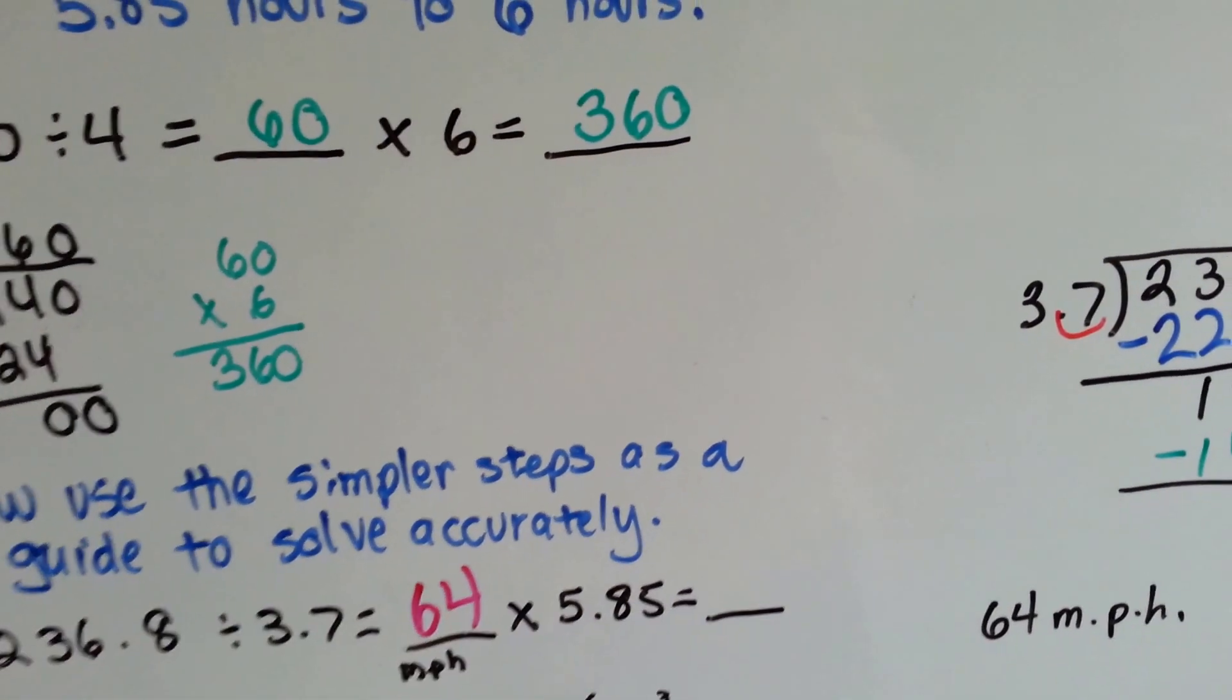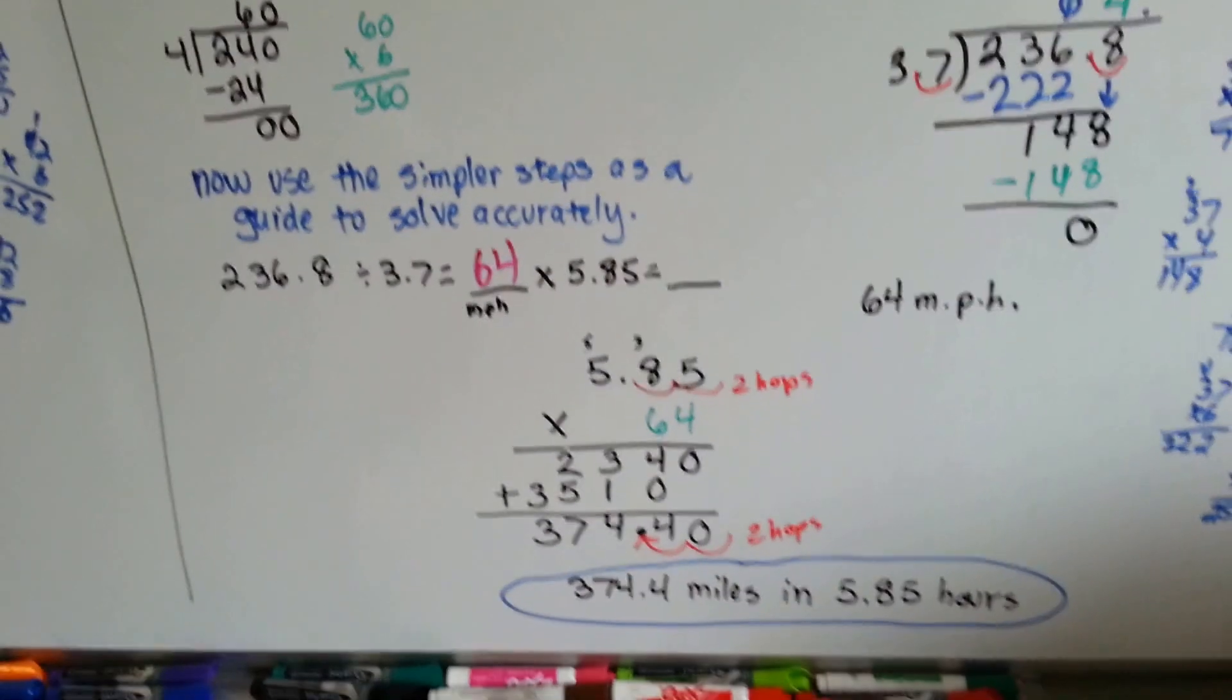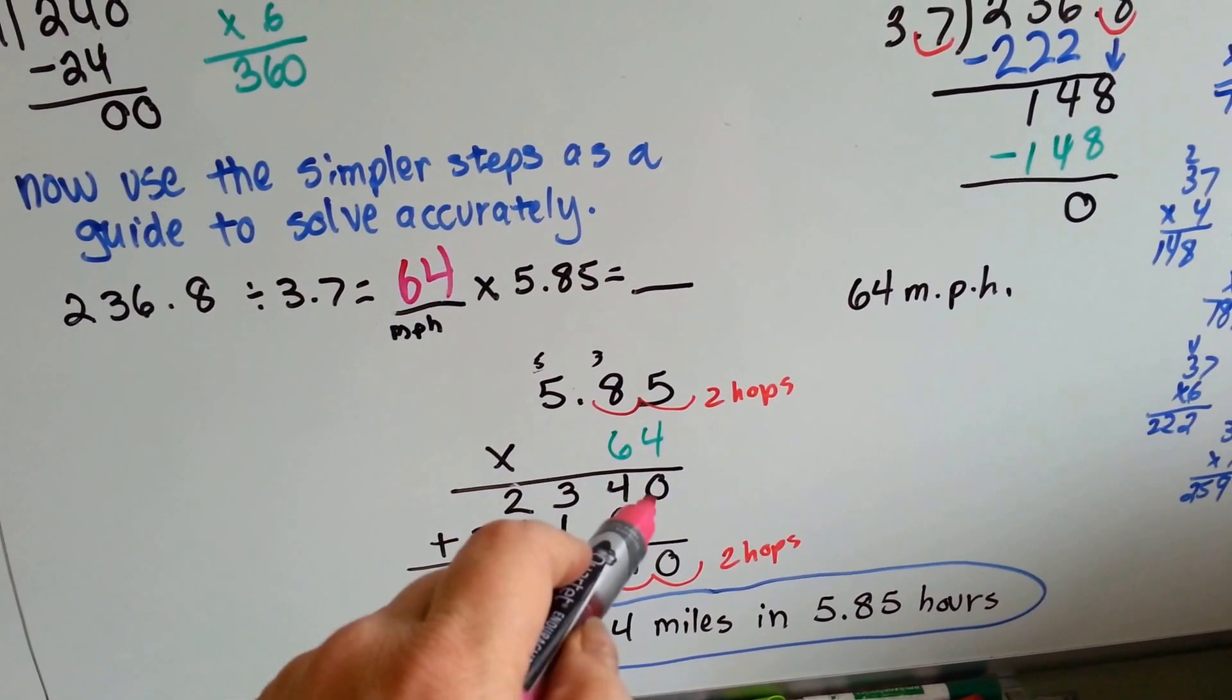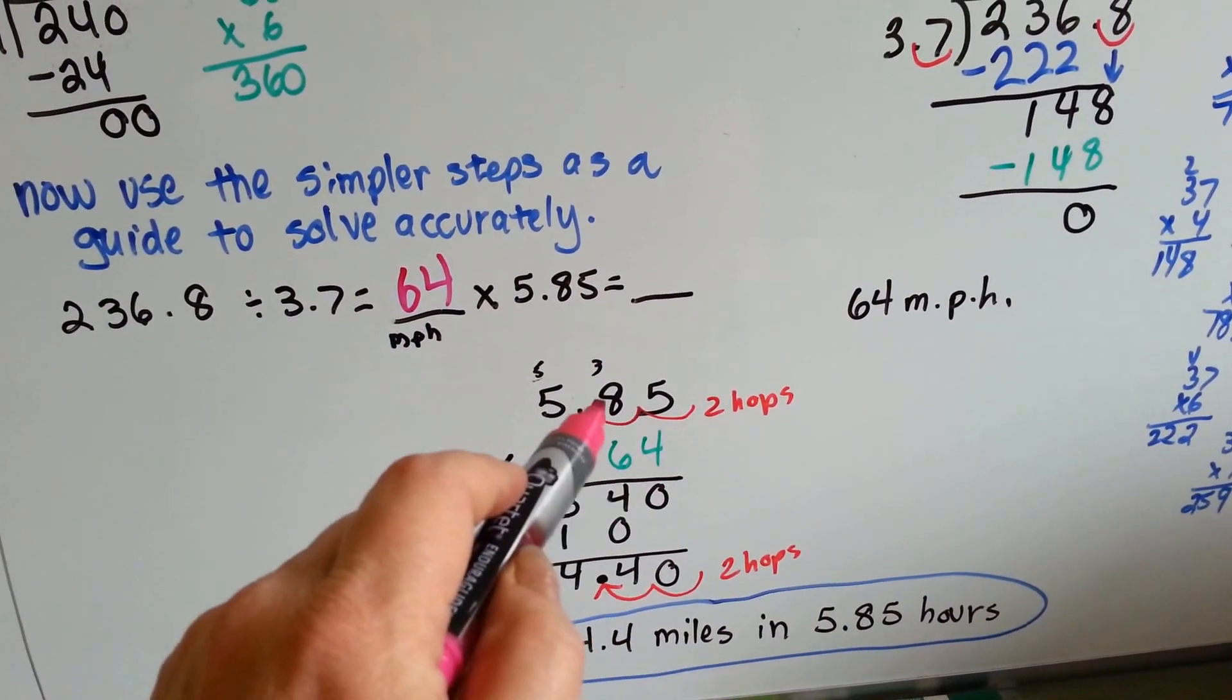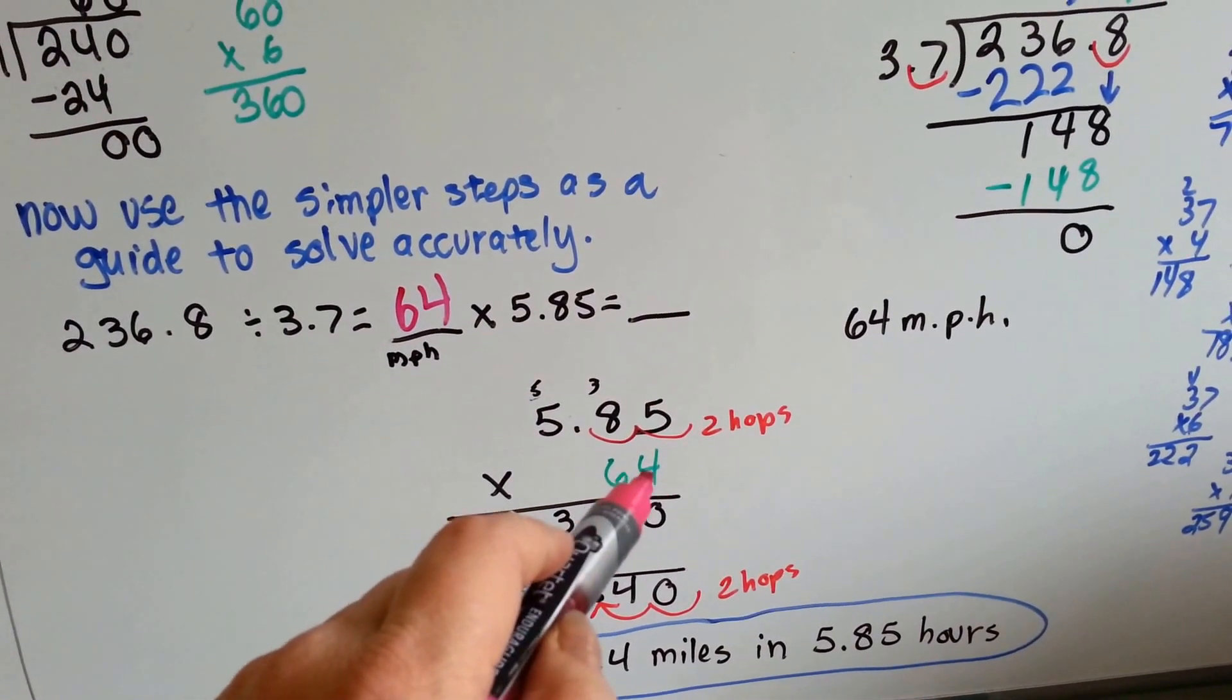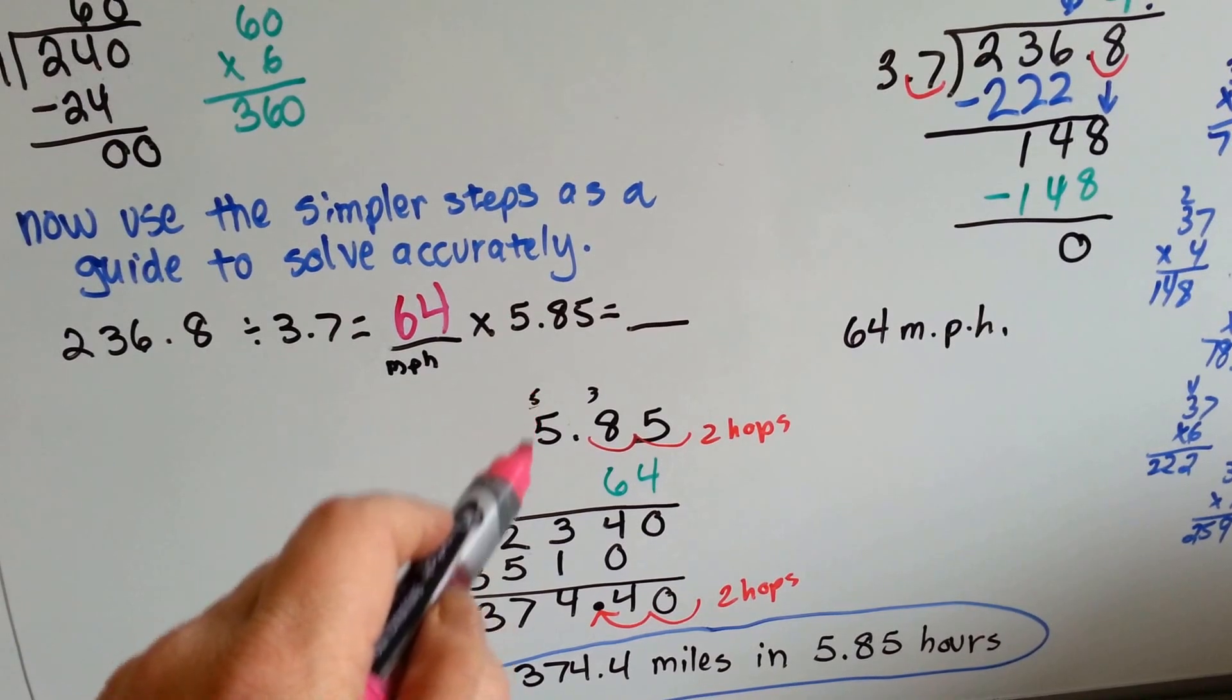Now, all we need to do is multiply it by the hours, 5.85, and we've got our answer. 4 times 5 is 20. Carry the 2, put the 0 down. 4 times 8 is 32, plus the 2 is 34. Carry the 3, put the 4 down. 4 times 5 is 20, plus the 3 is 23.